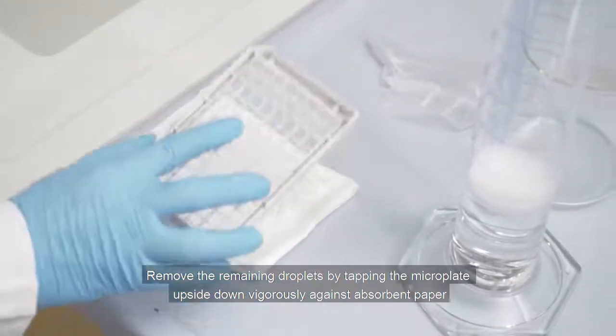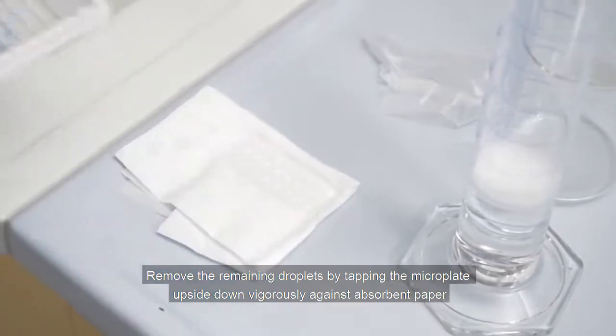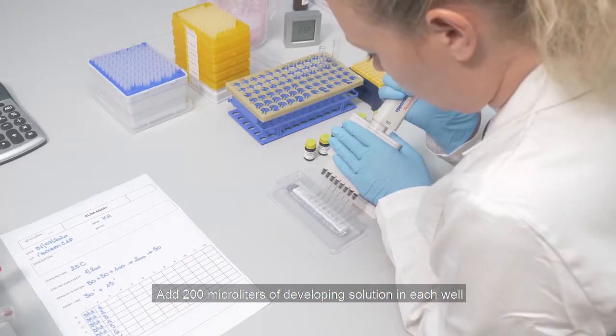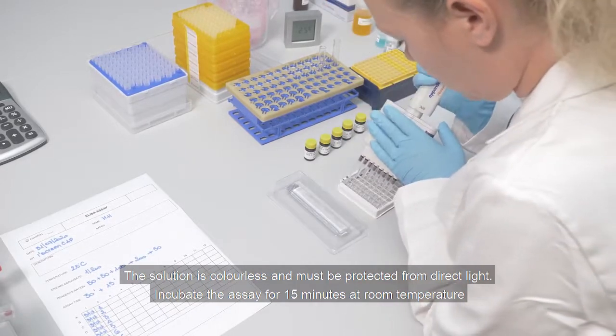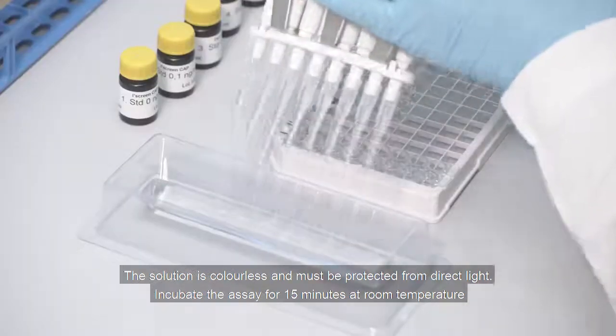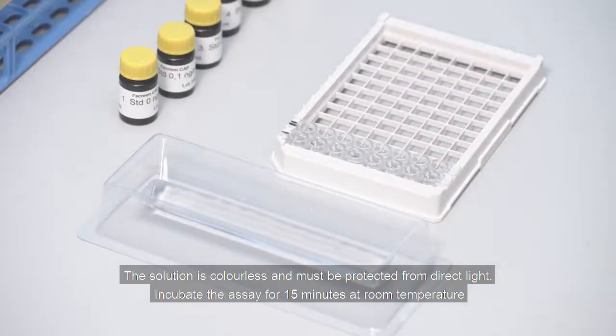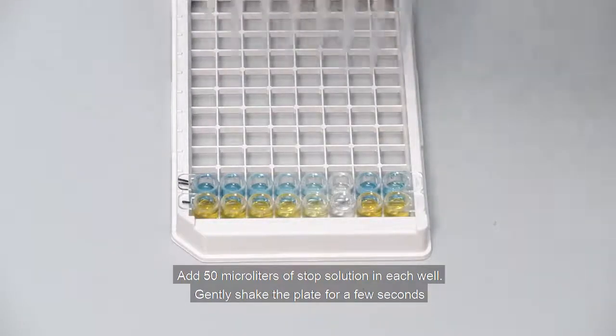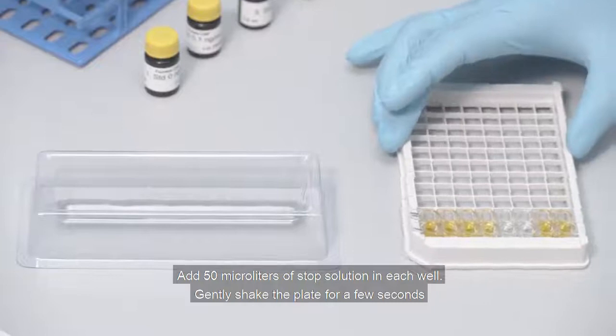Add 200 microliters of developing solution in each well. The solution is colorless and must be protected from direct light. Incubate the assay for 15 minutes at room temperature. Add 50 microliters of stop solution in each well. Gently shake the plate for a few seconds.